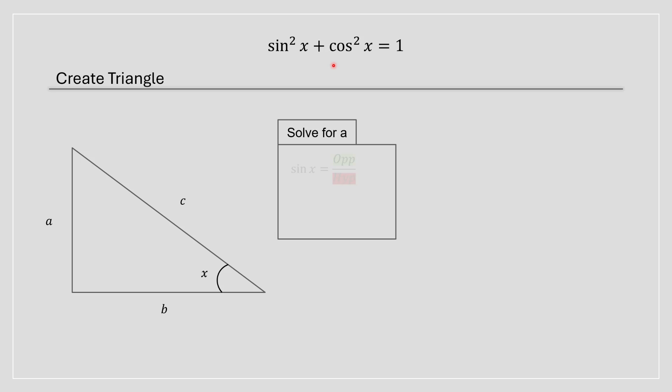So we're going to start with the a side. We know that we can apply SOH-CAH-TOA. More precisely, sin x equals opposite over hypotenuse, and we can find an expression in terms of a.